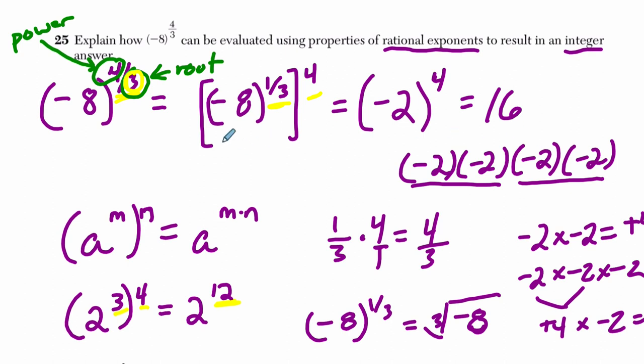So the math does speak for itself, but you could say something like, well, 4 thirds is equal to a third times 4. So I use the law of exponents. You can even point out what law you're using, which is right here.